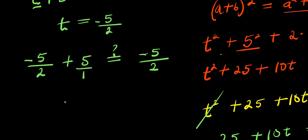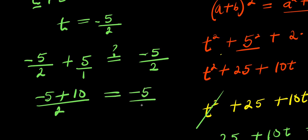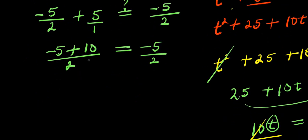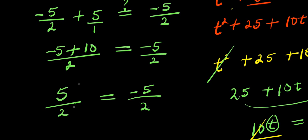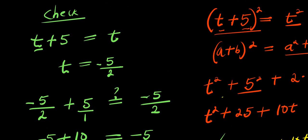Let's find the common LCM here. The common LCM is 2. So 2 divides 2 giving 1, then 1 times negative 5 is negative 5, plus 2 divides 1 giving 2, and 2 times 5 is 10. So we have negative 5 plus 10 over 2, which equals positive 5 divided by 2, and this should equal negative 5 divided by 2. Obviously, positive 5 divided by 2 is not the same thing as negative 5 divided by 2. So this particular solution is wrong.